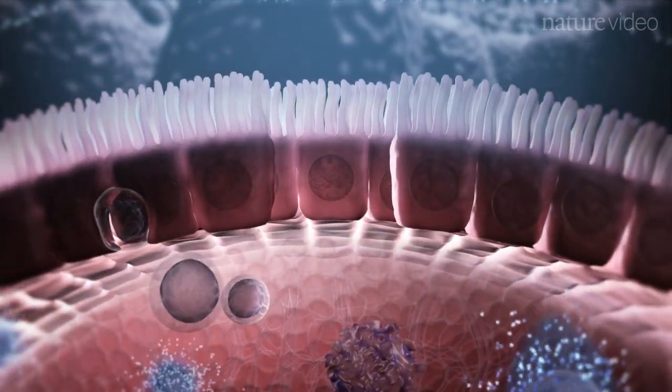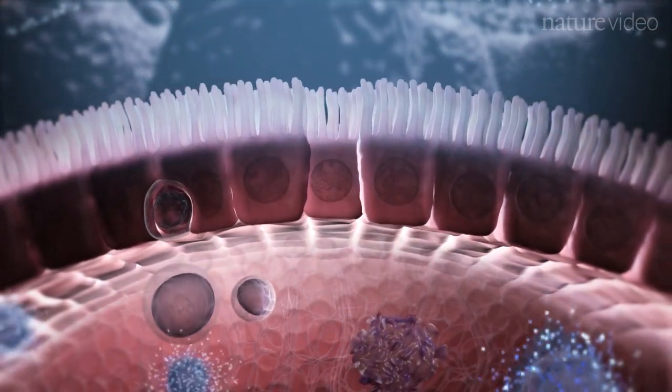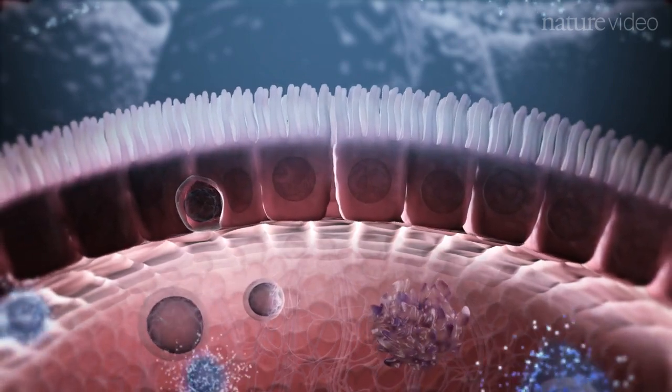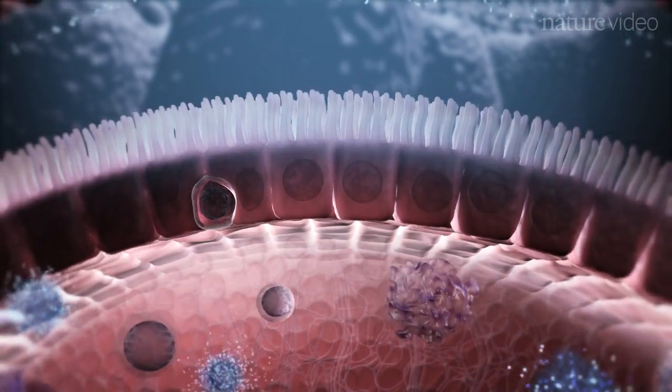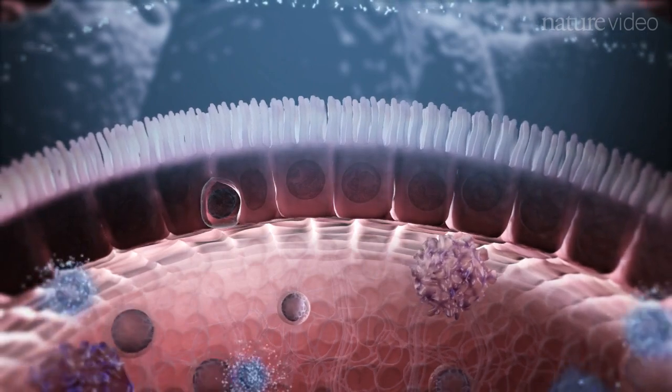Epithelial integrity is restored by replacement of any damaged cells with new ones from the intestinal crypts. Finally, Tregs are recruited once again to calm the immune response.